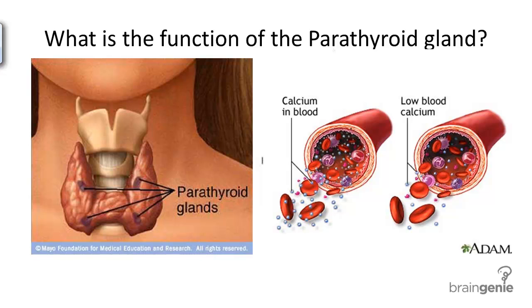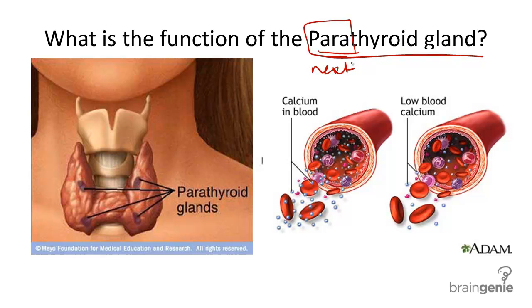What is the structure and function of the parathyroid gland? The parathyroid gland, meaning next to the thyroid gland, is a combination of four small glands located in or on the thyroid gland, which act as a part of the endocrine system.